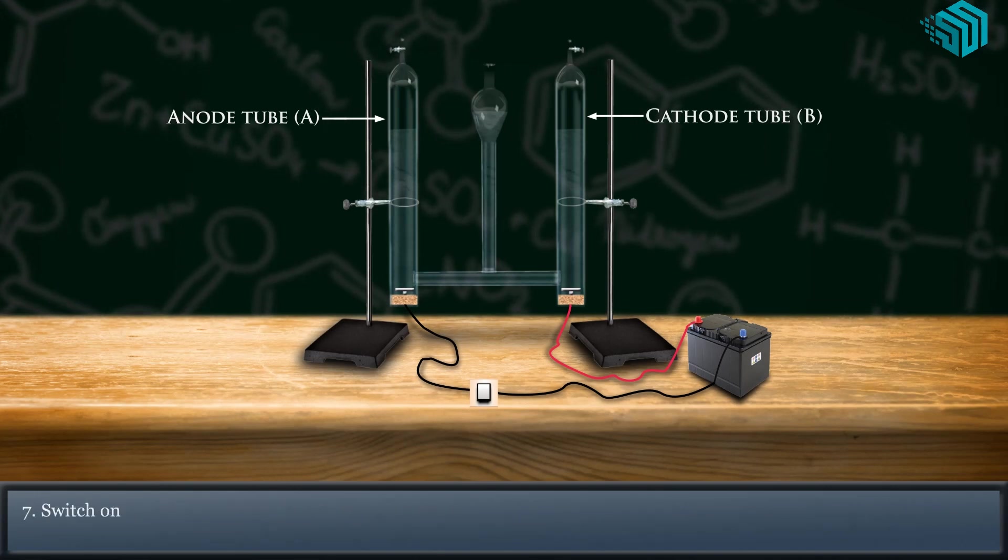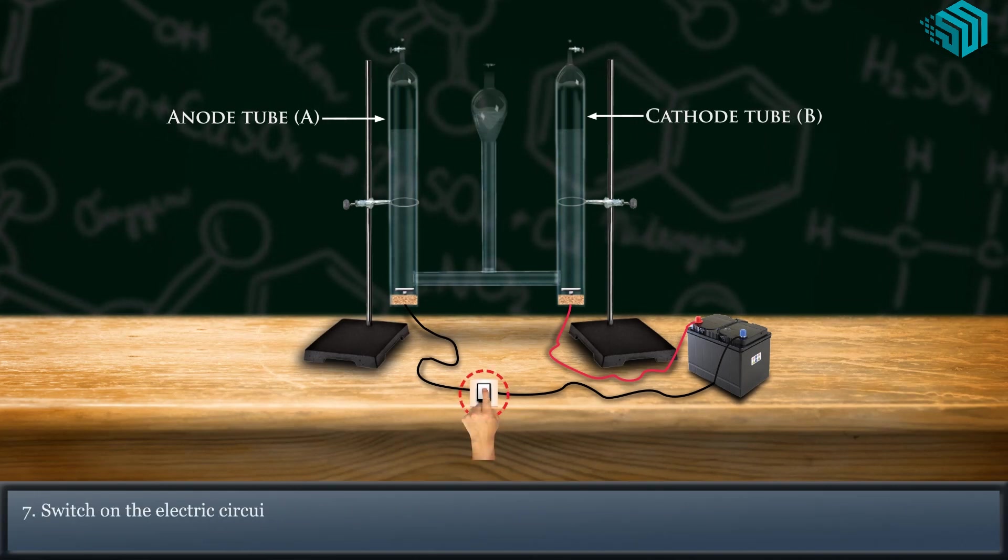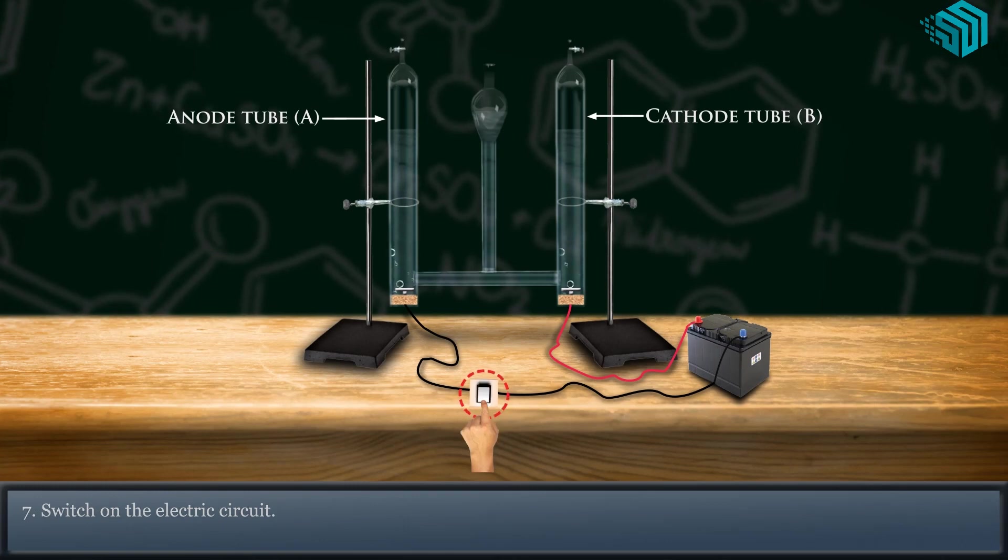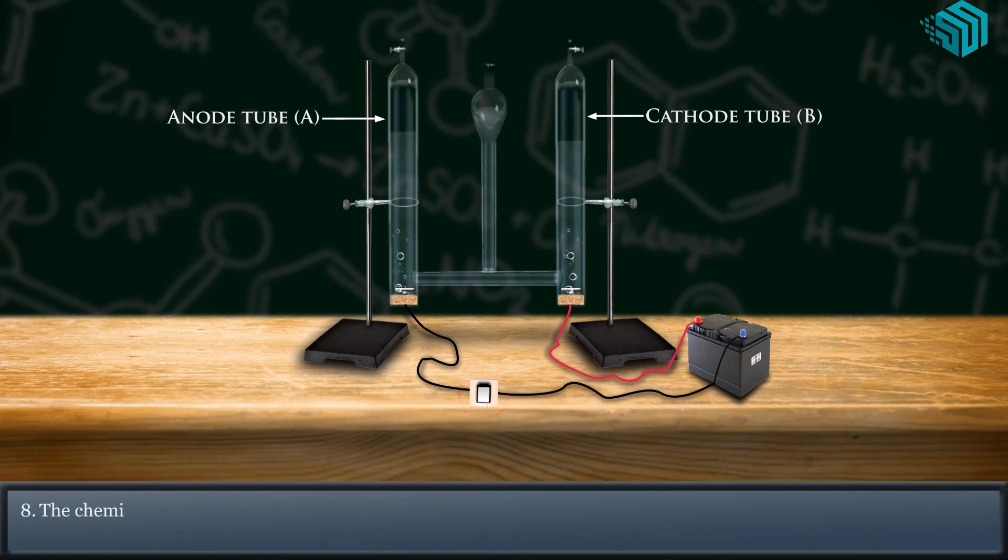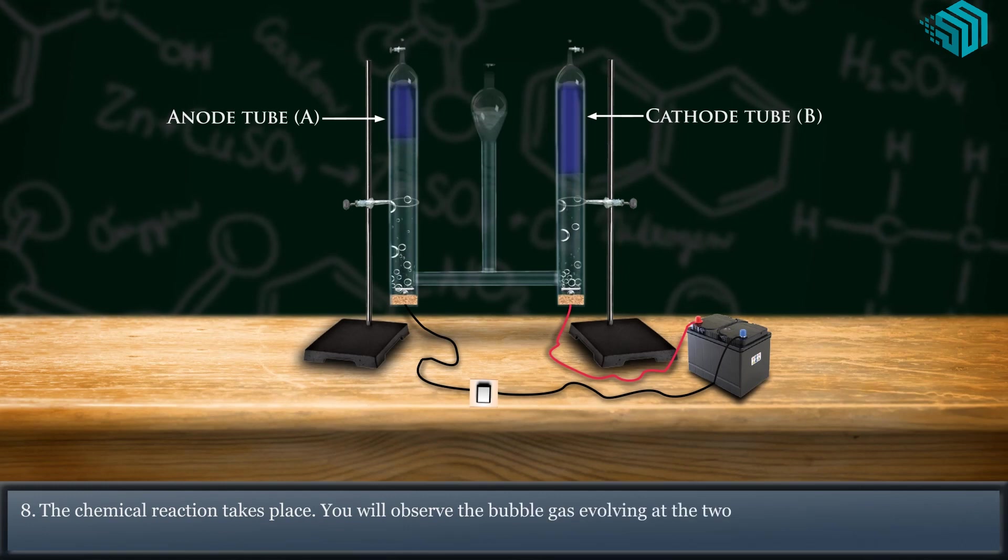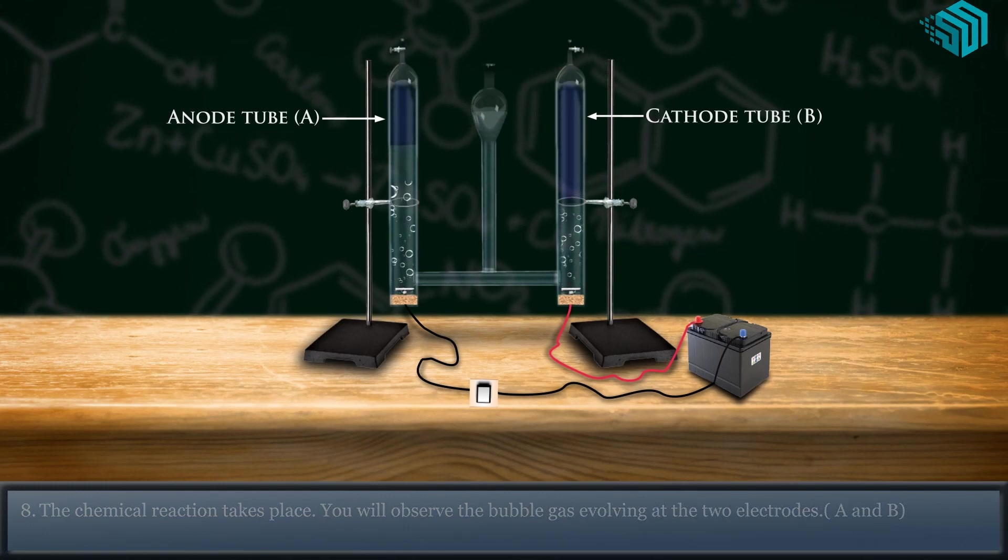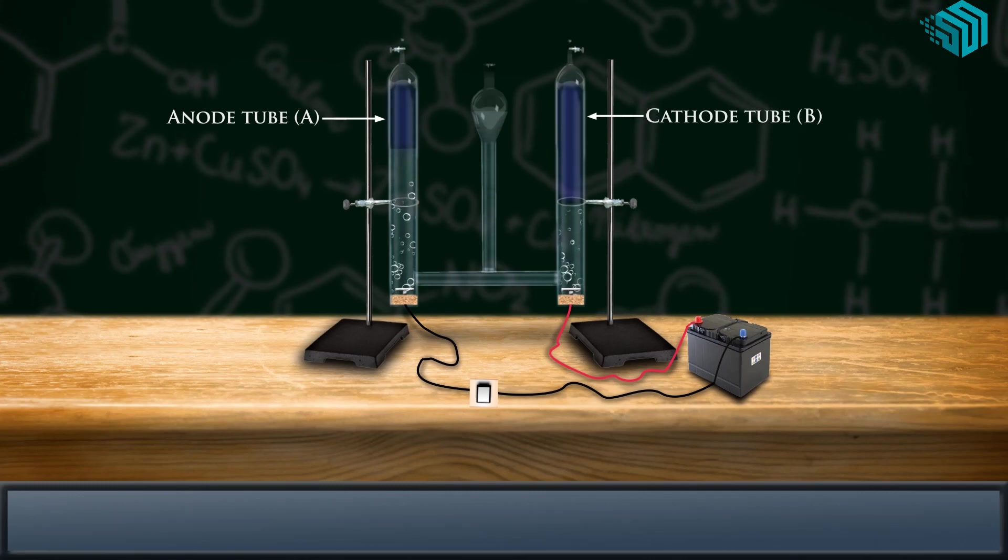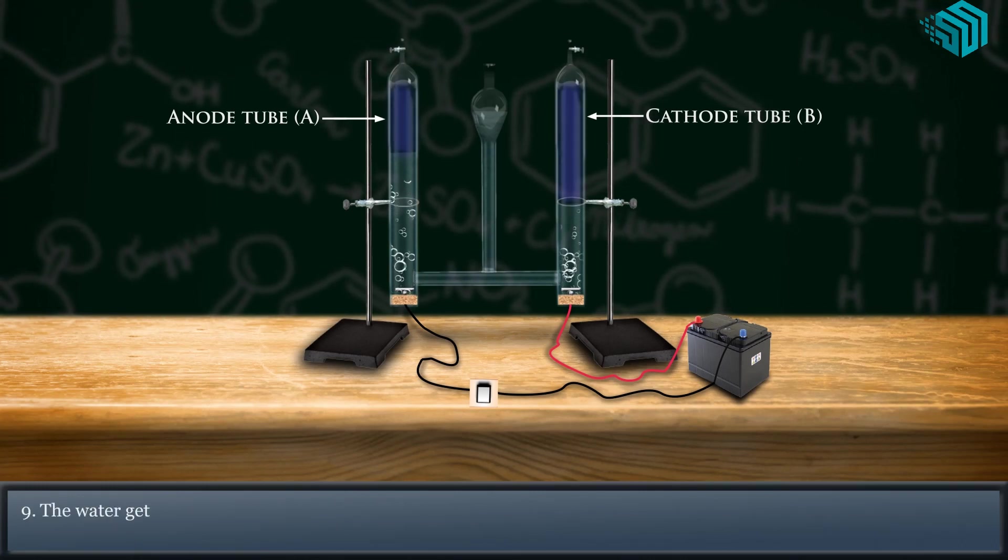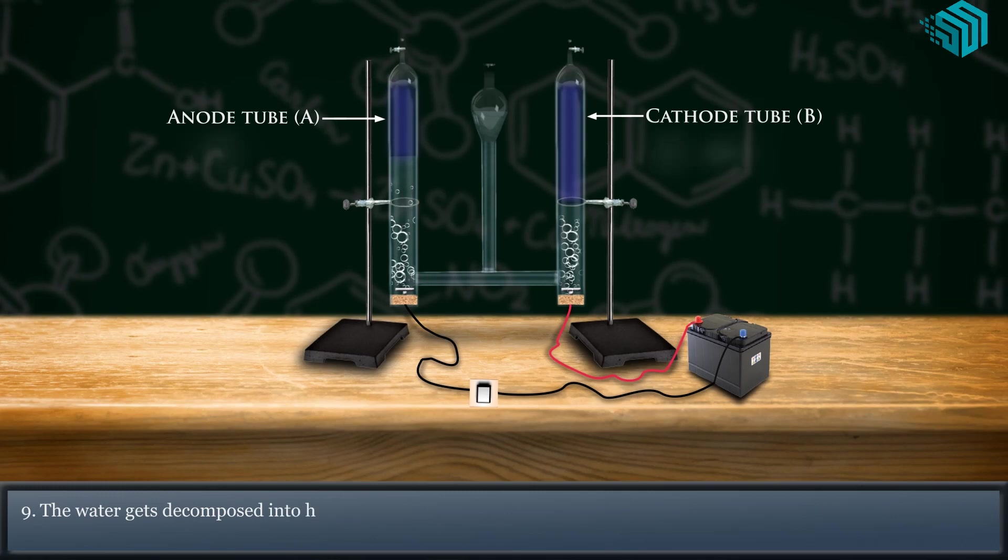Switch on the electric circuit. The chemical reaction takes place. You will observe the bubble gas evolving at the two electrodes A and B. The water gets decomposed into hydrogen and oxygen.